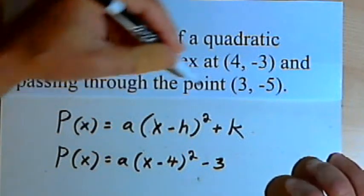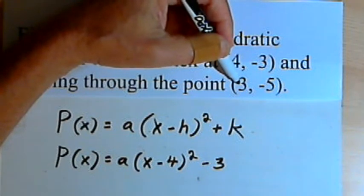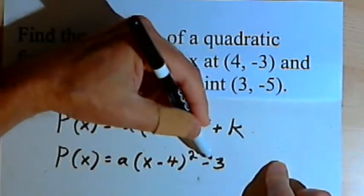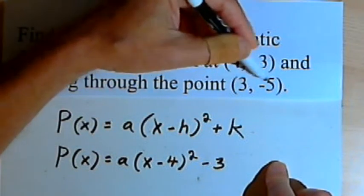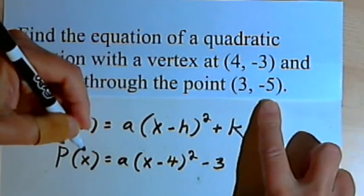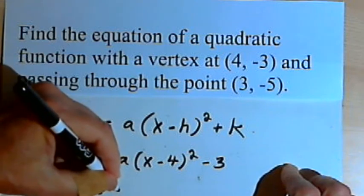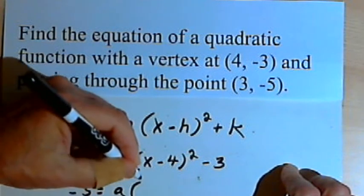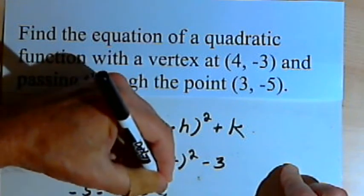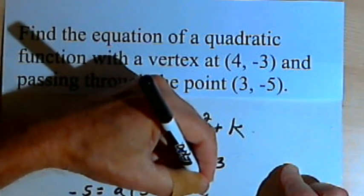And then I'm given this other point, 3, negative 5. Now the 3 is an x-value and the negative 5 is a y-value. So I can rewrite this, plugging in those values. Instead of p of x, I'm going to put in negative 5. So I'll have negative 5 equals a times — x is 3, so 3 minus 4 squared minus 3.